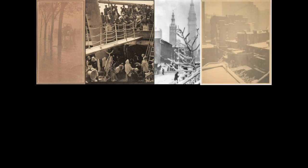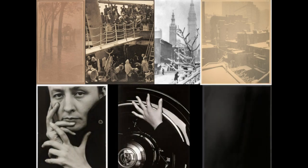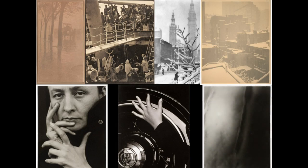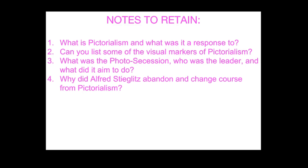To summarize: Alfred Stieglitz saw the optimism of a vertical city when he came to New York, and he explored what could be done with that. As he got older, he began to feel photography still hadn't been elevated to the same level as painting, and that photography and painting could not be in the same modernism together. His vision of the city became more claustrophobic, and Andy Grunberg sees this step as irreconcilable for what the next step to modernism would be. What do you think? Notes to retain: One, what is pictorialism and what was it a response to? Two, can you list some of the visual markers of pictorialism? Three, what was the Photo Secession, who was the leader, and what did it aim to do? Four, why did Alfred Stieglitz abandon and change course from pictorialism?